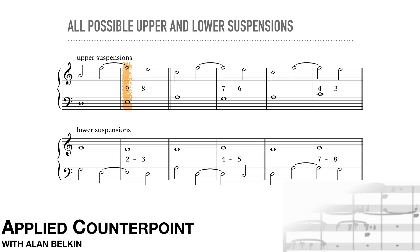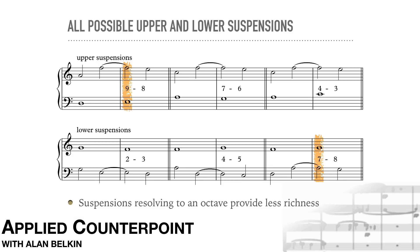The 9-8 suspension, and even more the 7-8 suspension, can sound strange in two parts also, due to the bare sound of the resolutions into octaves. In three and four parts we can add richness with a third voice, but in two parts these bare holes can be unconvincing. In particular, the 7-8 suspension can sound odd as the resolution is already sounding above. The effect is even cruder if the 7th is a major 7th instead of a minor 7th.